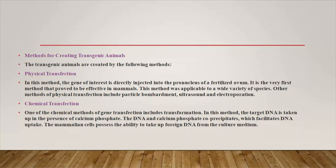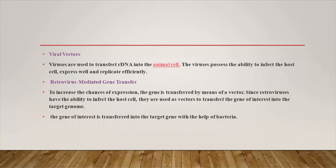The next method is chemical transfection. One chemical method of gene transfection includes transformation, where the target DNA is taken up in the presence of calcium phosphate. The DNA and calcium phosphate co-precipitate, which facilitates DNA uptake. The mammalian cell possesses the ability to take up foreign DNA from the culture medium.